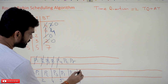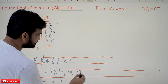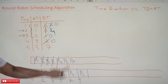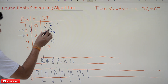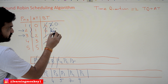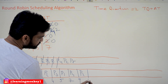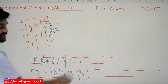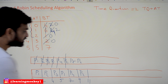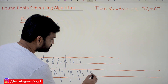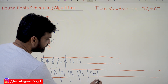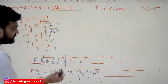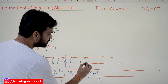P4 runs for two units of time, completing at t=9. After P4, the next process is P2 from the queue. P2 had four units remaining, and two units are used here, running from t=9 to t=11. P2 now has two units remaining and is shifted back to the end of the queue.